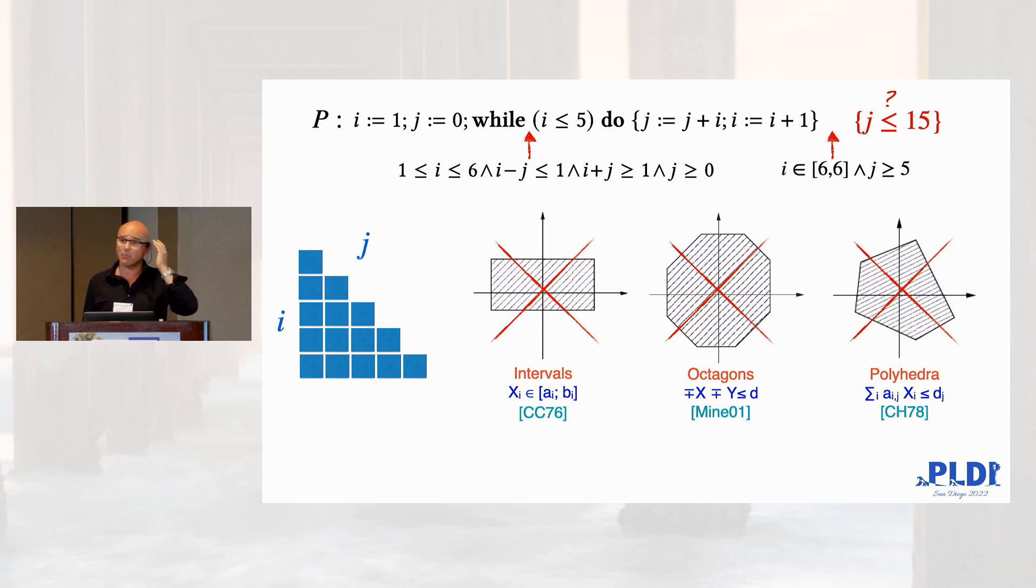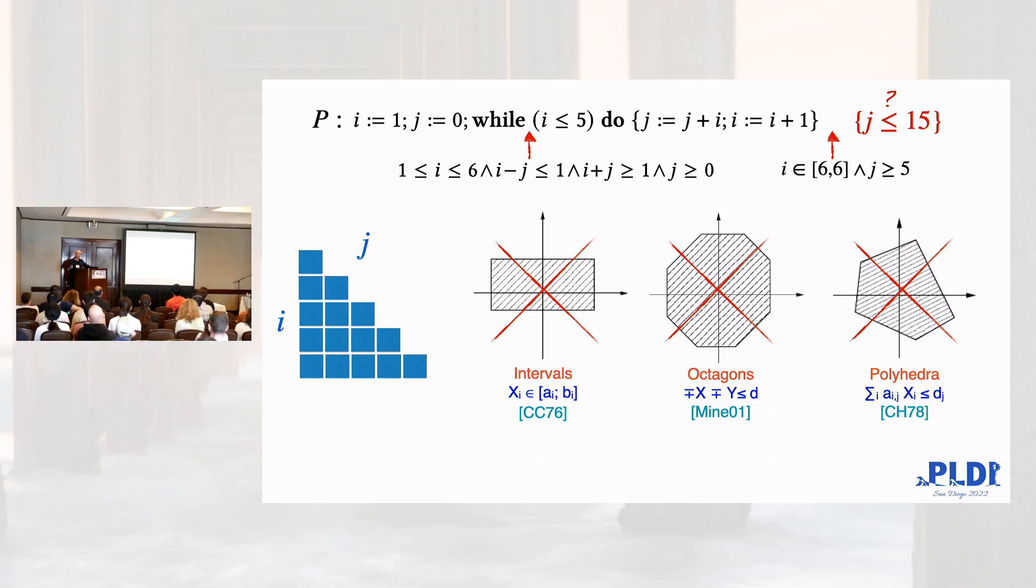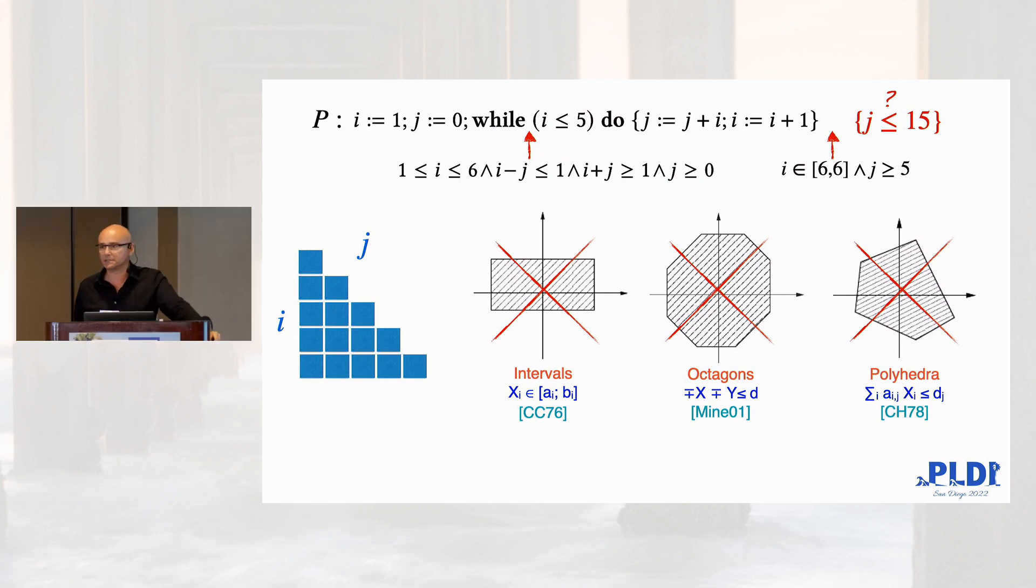The problem with global completeness is that if you refine any of those domains, in particular intervals, with respect to that program, you get the all-complete domain. So it blows up.